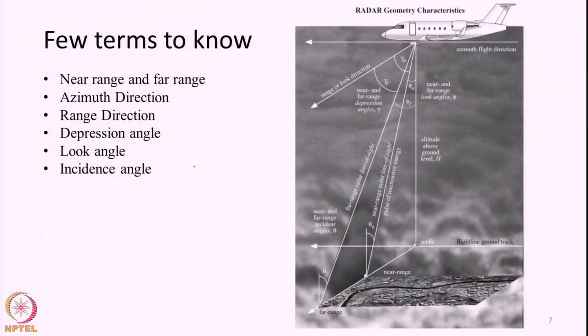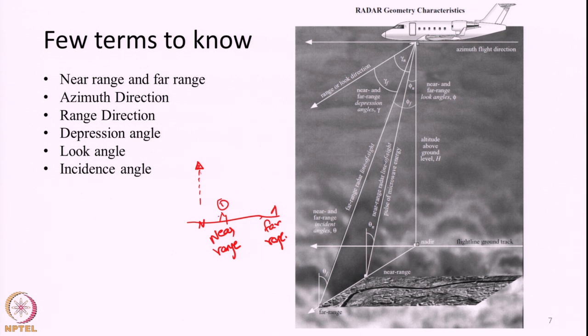If an object is present near to the aircraft we call it near range — it is closer to the radar system. If we represent it diagrammatically: this is the aircraft, this is the nadir point on the terrain, here there is one house and farther away there is another house. House number 1 is at near range — closer to the radar system — and far range means away from the radar system. So we have three terms: azimuth direction, range direction, and near range and far range.